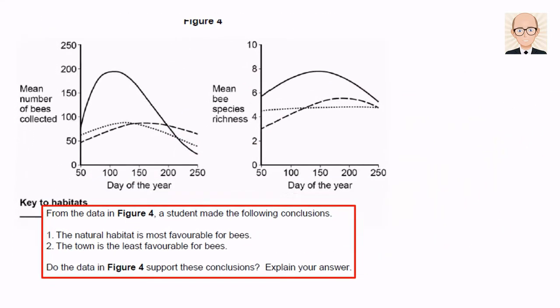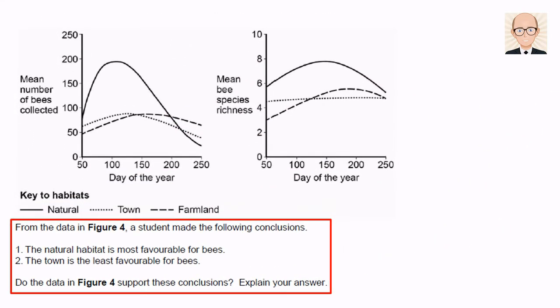There's quite a lot of information in these two graphs. Some of it supports the conclusions made by the student, and some refutes them. I'm going to highlight some of the evidence that we could use to answer the question. Let's focus on each conclusion in turn, starting with the natural habitat is the most favourable for bees.